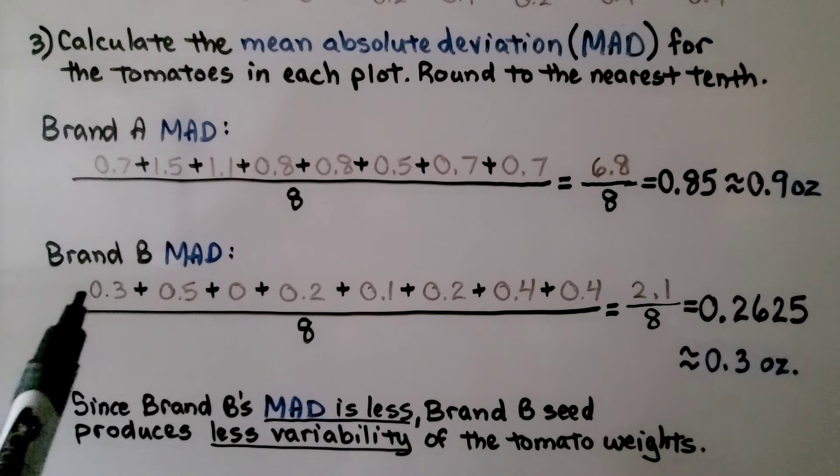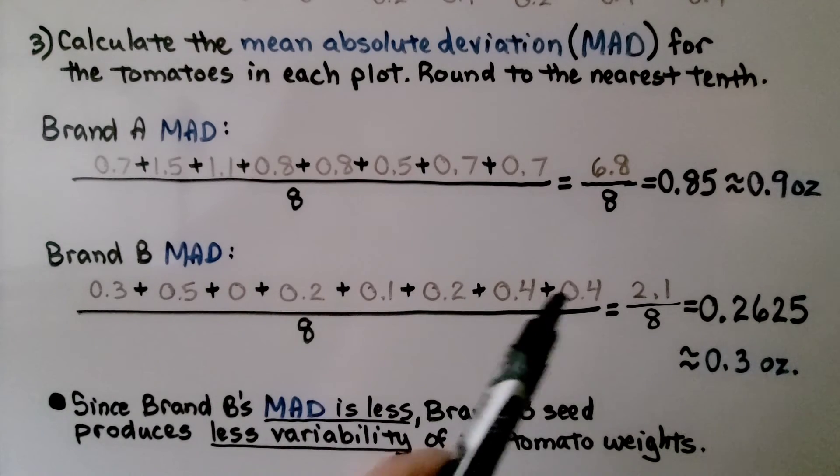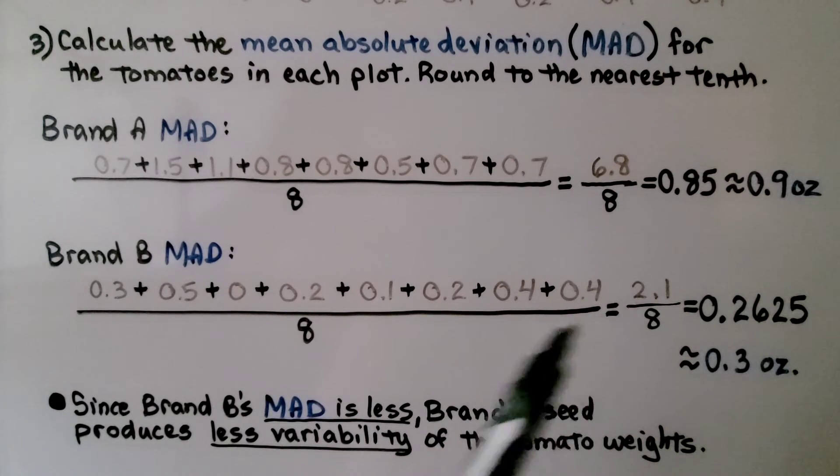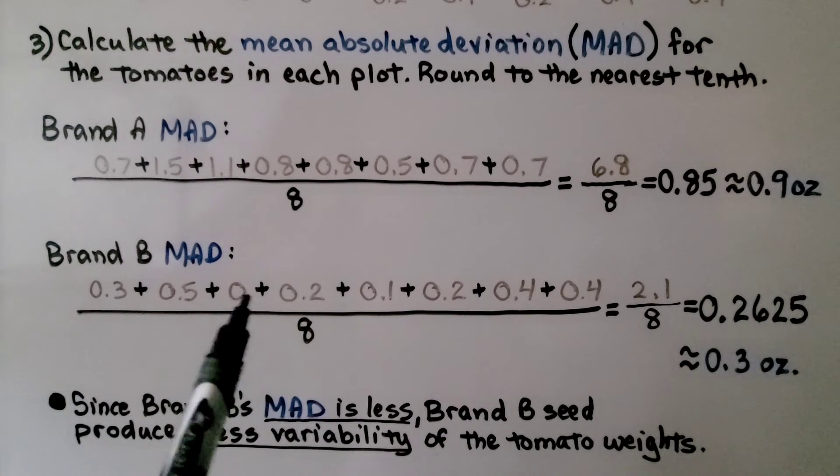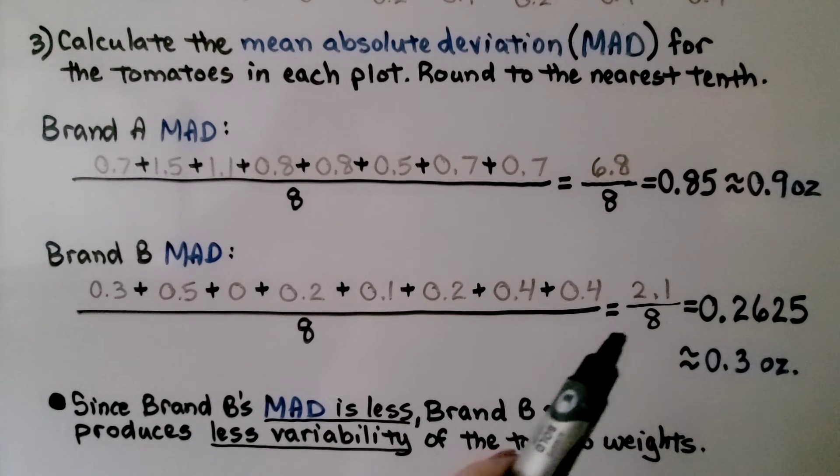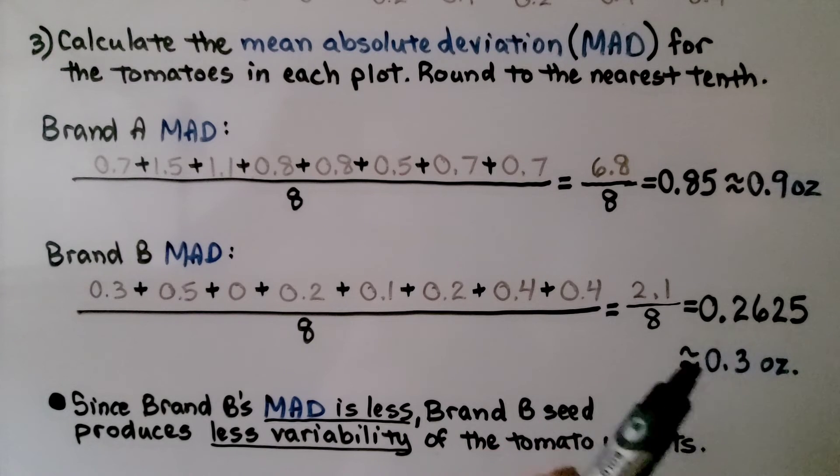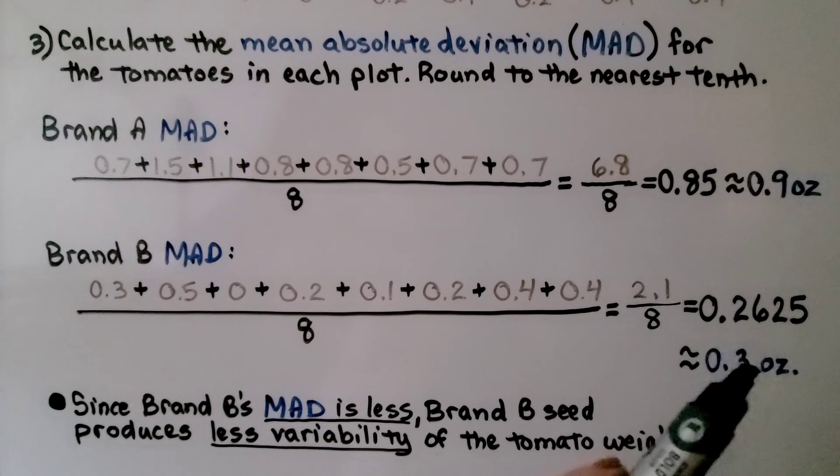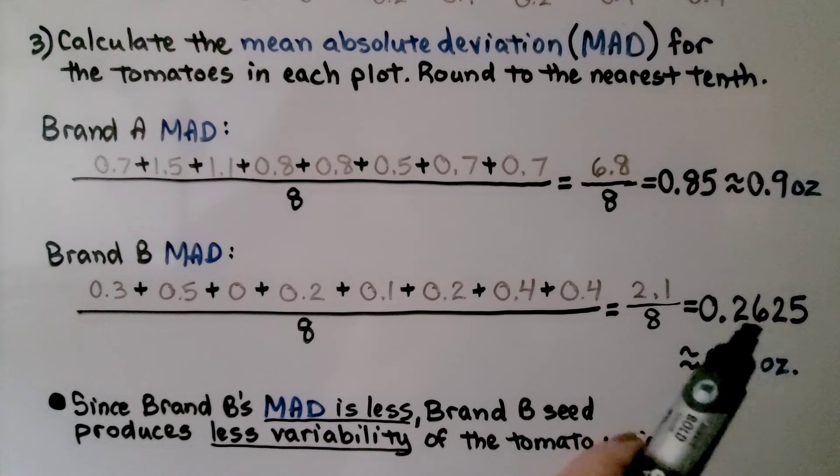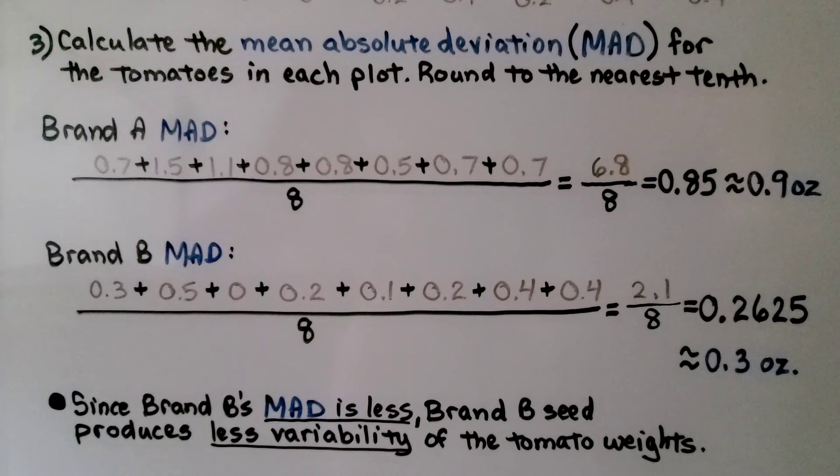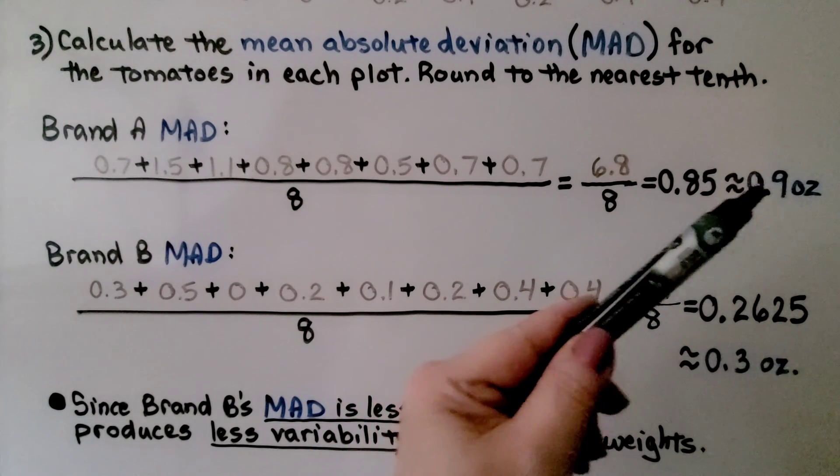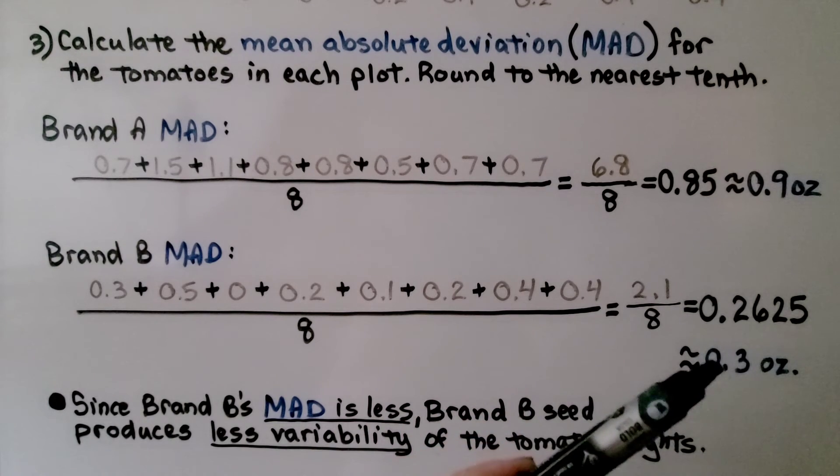For brand B, we add all the distances from the mean and we get 2 and 1 tenth. We counted that zero because we need to divide by eight. If we didn't count that zero, we'd be dividing by seven. We need to divide it by eight. And 2 and 1 tenths divided by eight is .2625. This six is going to tell the two to round up to a three. So we have about 3 tenths of an ounce. So we can see this is about 9 tenths of an ounce. And this is 3 tenths of an ounce.